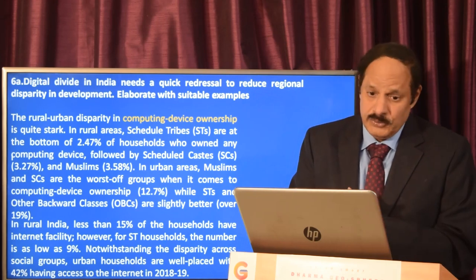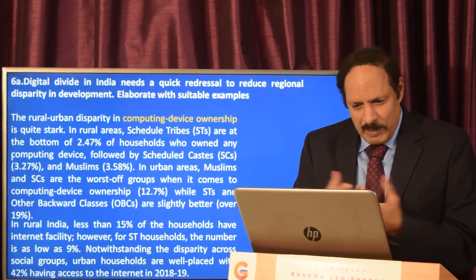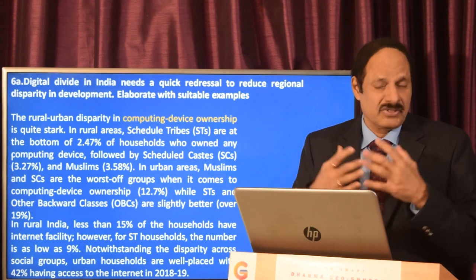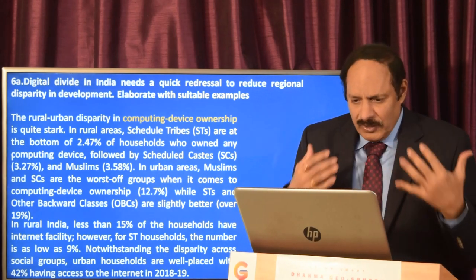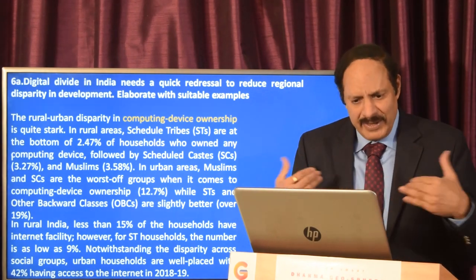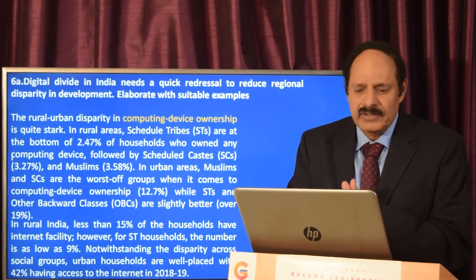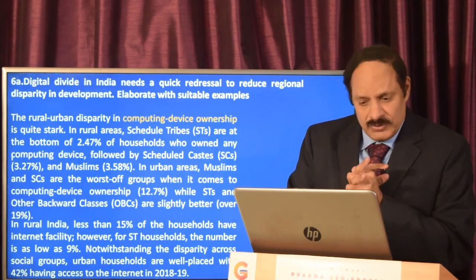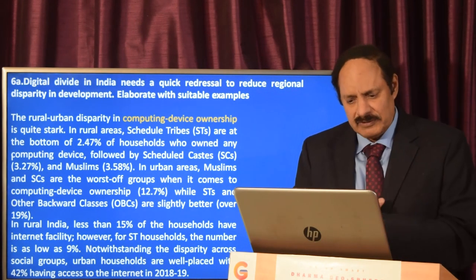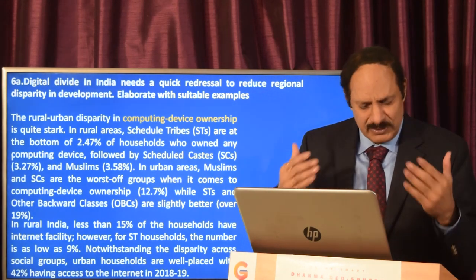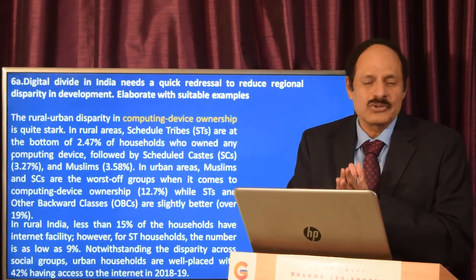The rural-urban disparity in computing device ownership is quite stark. In rural areas, STs are at the bottom of households owning any computing device, followed by SCs and then Muslims. In urban areas, Muslims and SCs are the worst-off groups in computing device ownership, while STs and Other Backward Classes are slightly better. In rural India, less than 15% of households have internet facility, and for ST households it is as low as 9%.